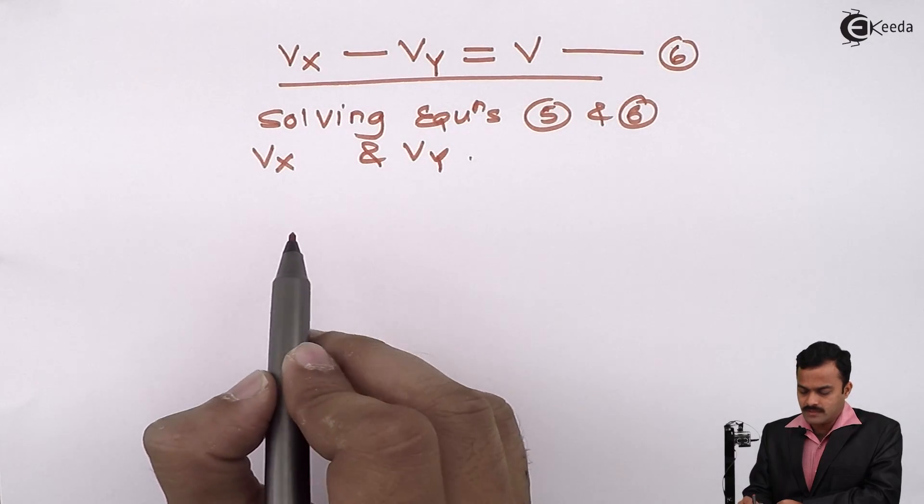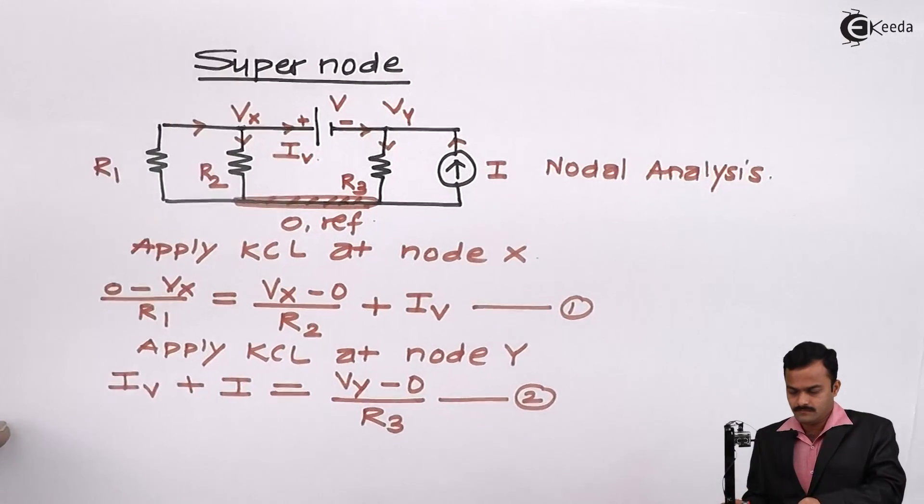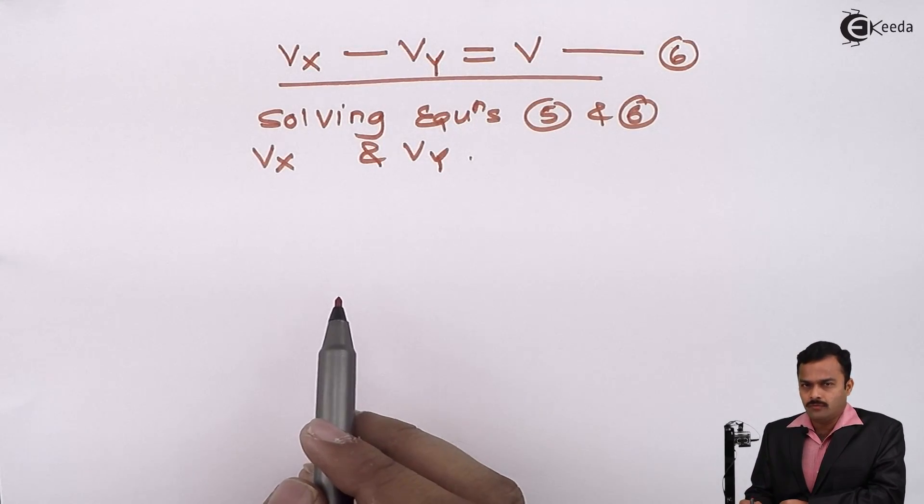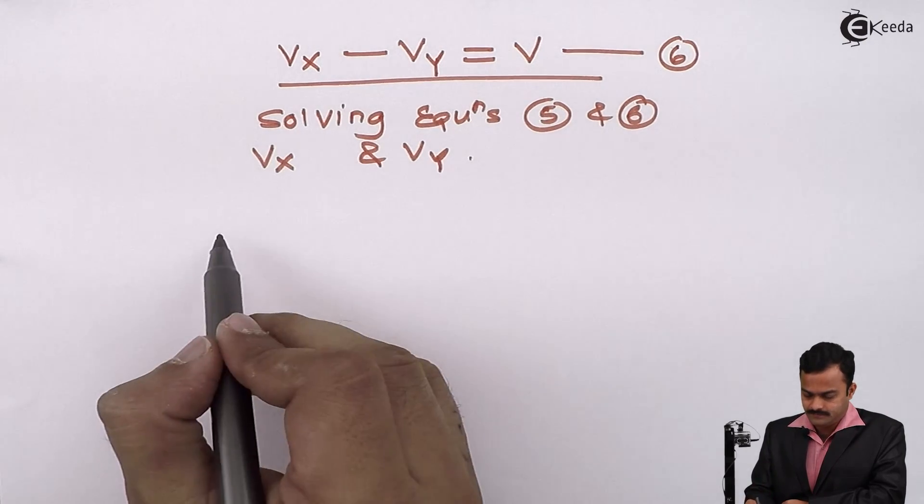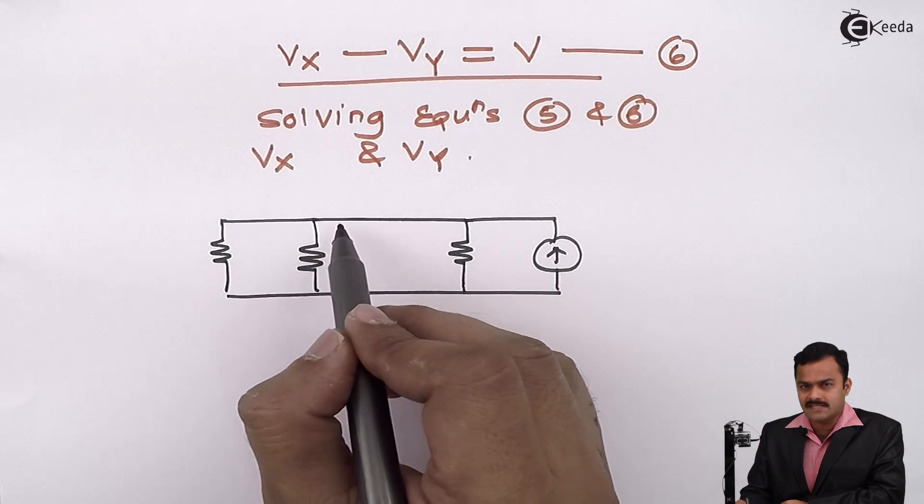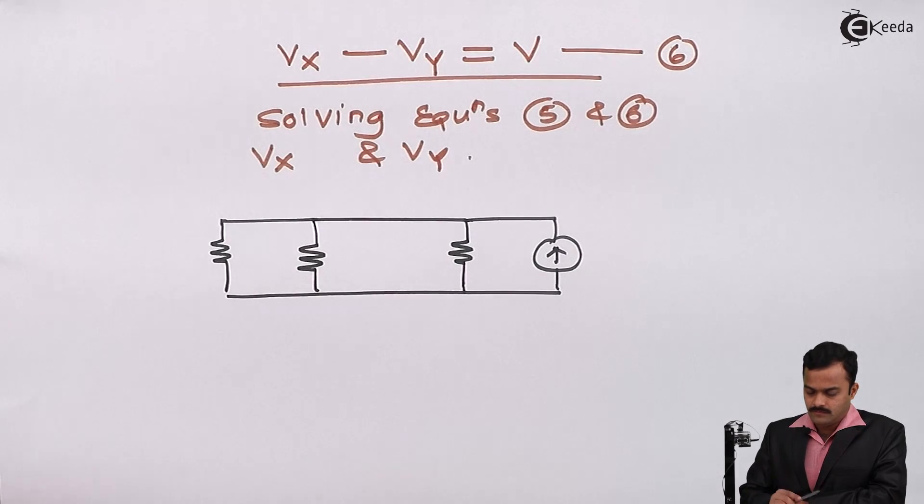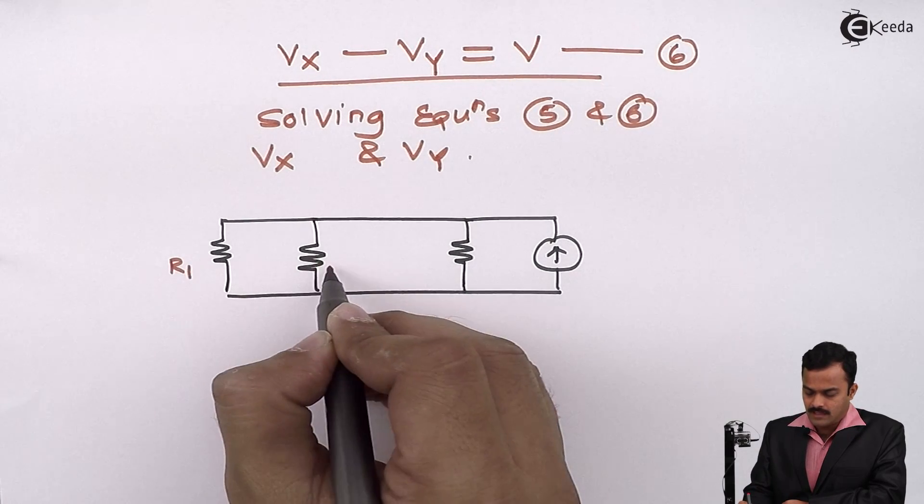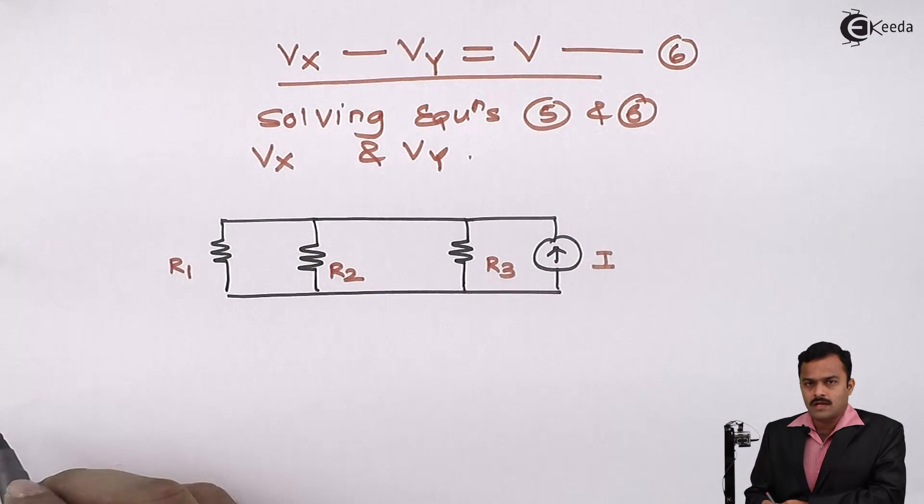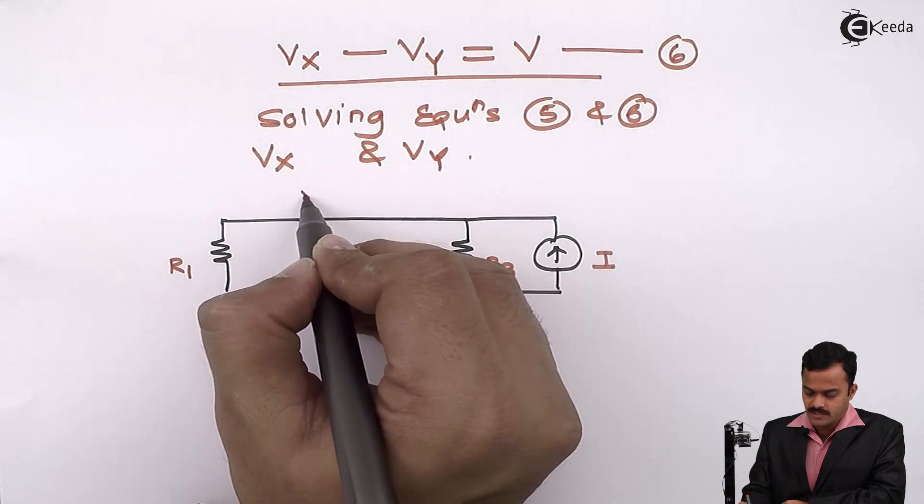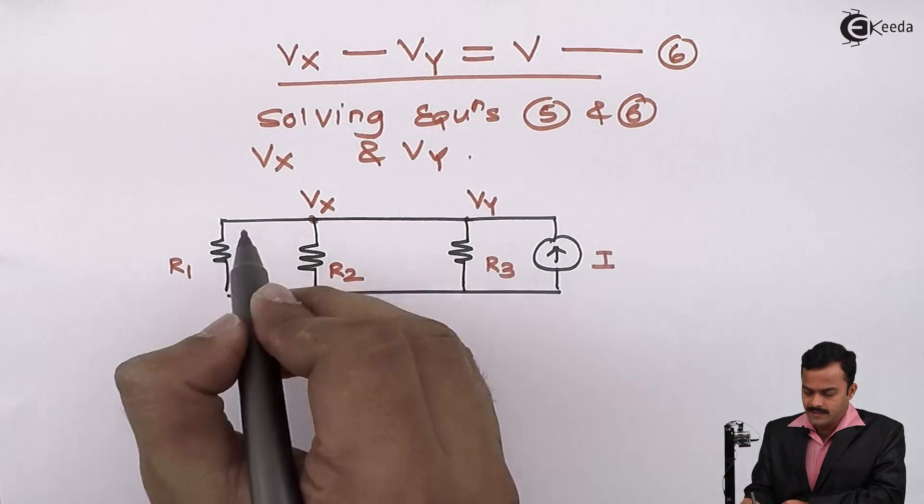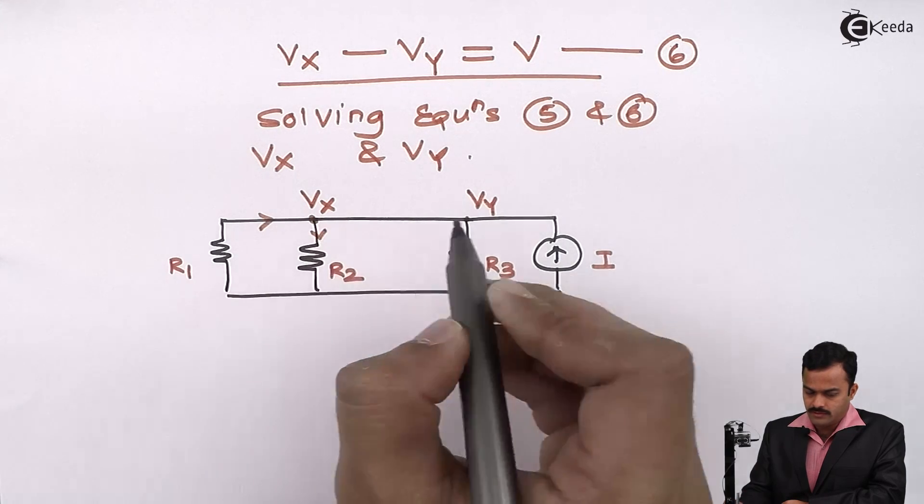So I will consider a circuit once again. So better I will draw the circuit removing V voltage source. So the circuit will be like this. So I remove the voltage source means I have considered that as a short circuit. Now these are R1, R2, R3, current source having a value I. This potential is Vx. This potential is Vy.